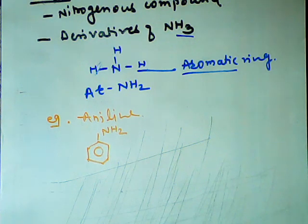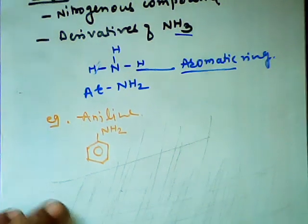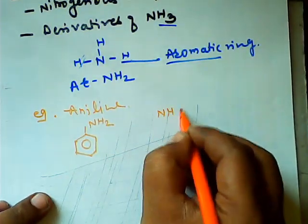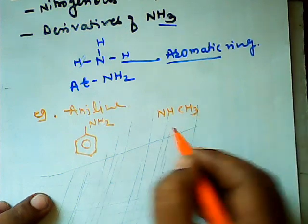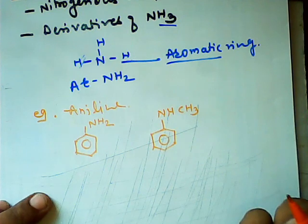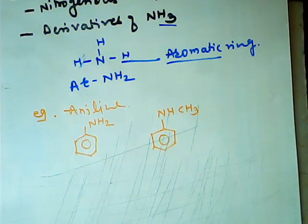And your N-methyl aniline. NHCH3, N-methyl aniline structure and N-methyl. These are some of the examples of aromatic amines.